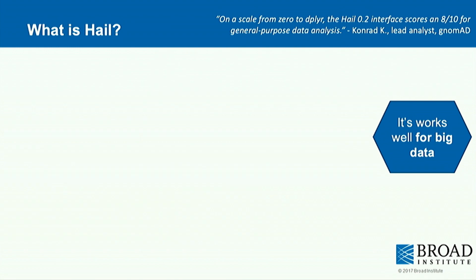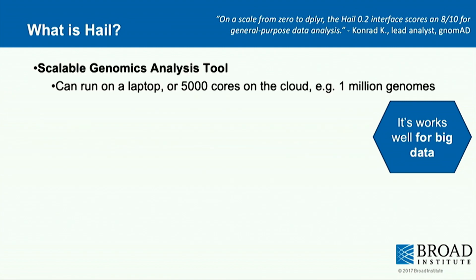With Hail, my QC ran after optimizing parameters in just 10 minutes, and my VEP annotation ran within one hour for all 4,000 genomes — using about 80 full nodes on Google Cloud. That is great performance compared to running genetics a few years ago when it would take forever.